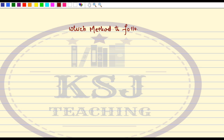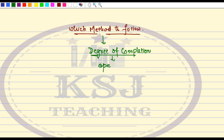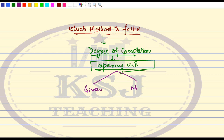If the question is silent as to which method should be followed, the first thing you have to do is look for the degree of completion of the opening WIP. This is the first thing you have to see in the question — whether the degree of completion is given to you or not. If the degree of completion is not given to you, then you cannot apply the FIFO method. In that case, the only method you can apply is the Weighted Average Method.